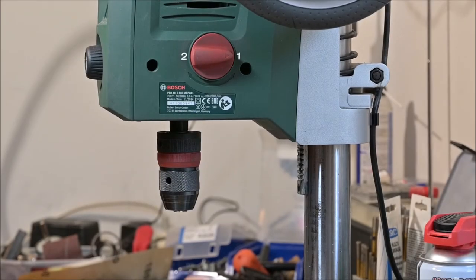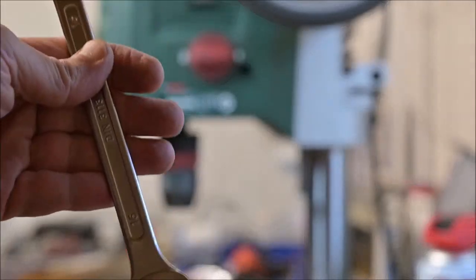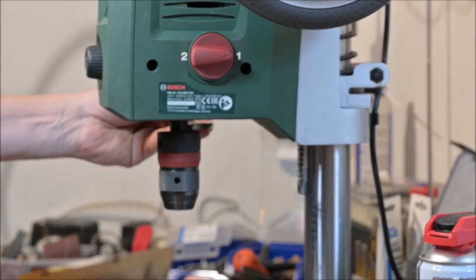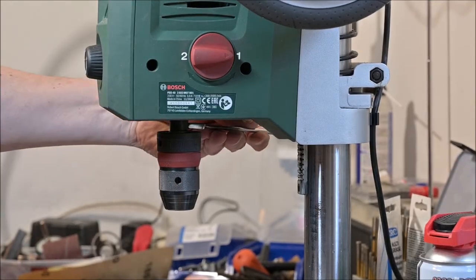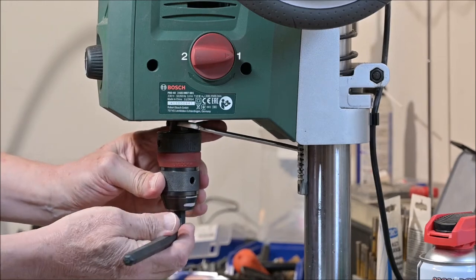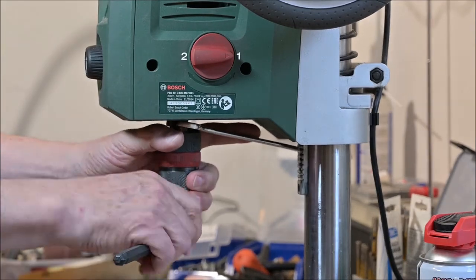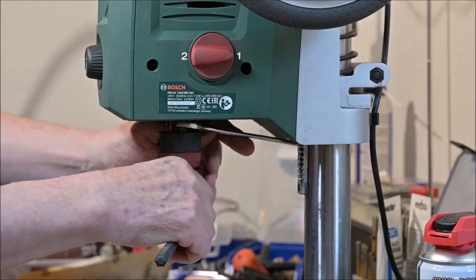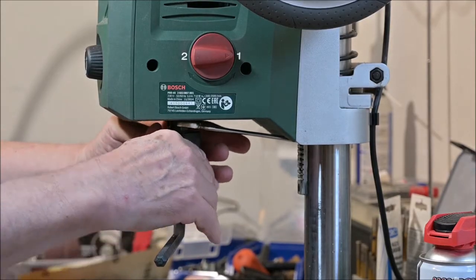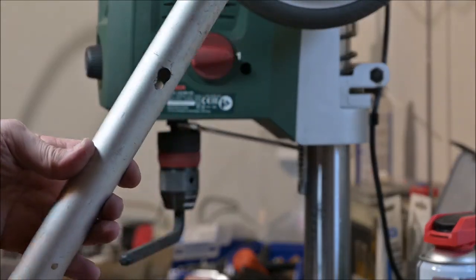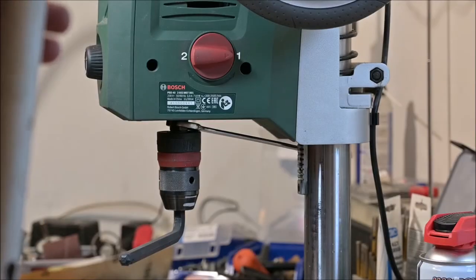Changing the chuck is pretty easy. All you need is a 16 millimeter wrench and large Allen key. The wrench is used for locking the motor axis to prevent it from rotating when you need to apply the rotational force to remove the chuck. And of course the Allen key is used for enabling you to apply enough force to rotate the chuck so you can remove it.